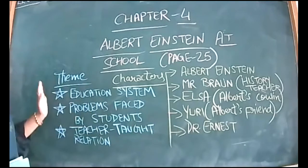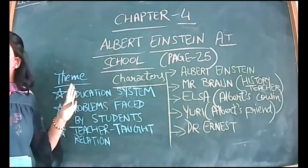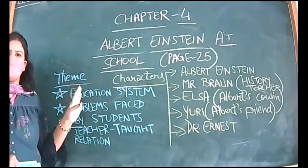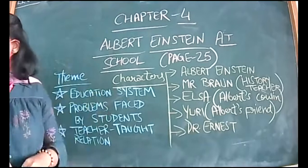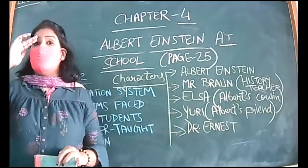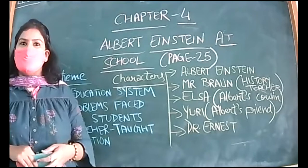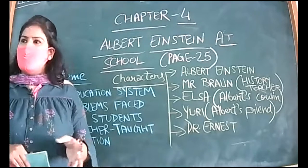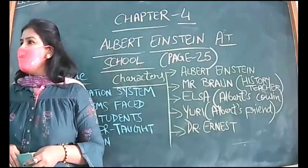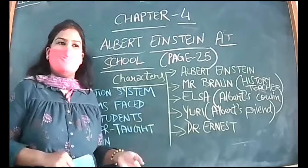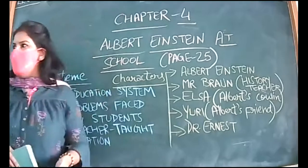Now, what we are going to read — everybody knows who Albert Einstein is. If I ask you, raise your hand. He's a scientist. Do you know which formula he invented? Yes — E equals mc squared. Being science students, you should know about Albert Einstein.